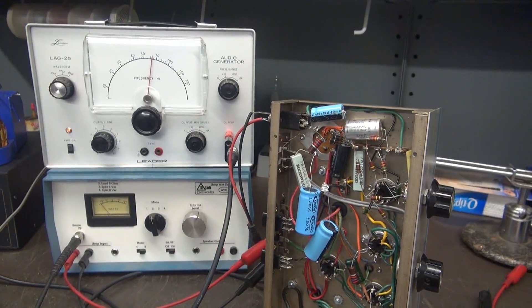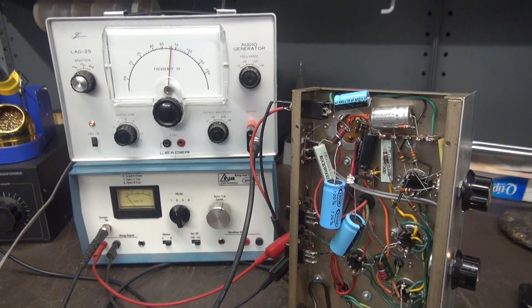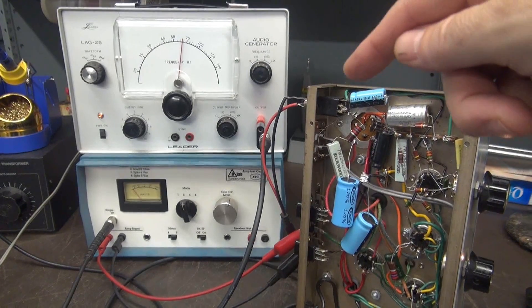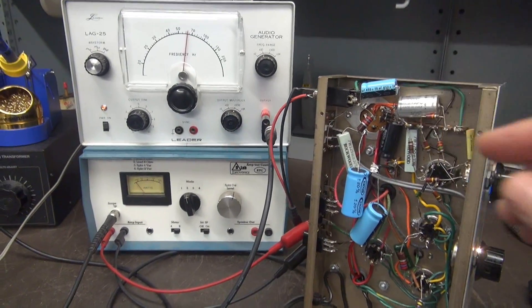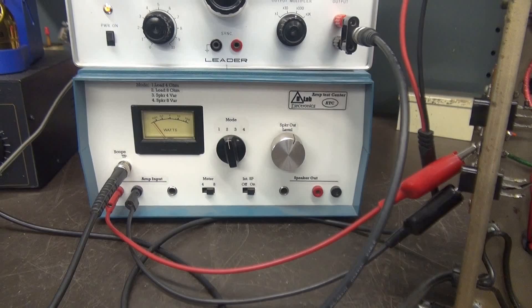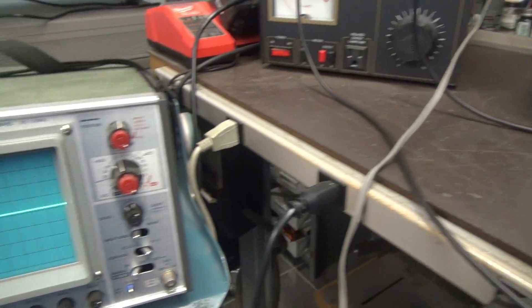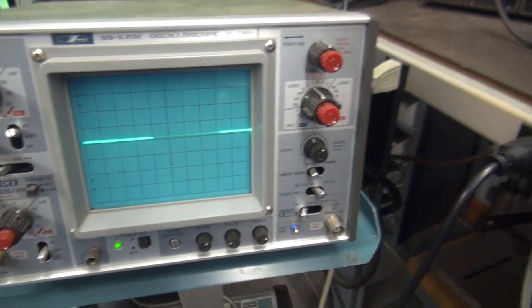Alright, so at this point, I'm going to turn on the amp. I have an audio generator simulating an input to the mic jack. We're using the D-Lab audio test set, so it has a dummy load resistor in it, a wattmeter, and an output that's going over here to my oscilloscope.